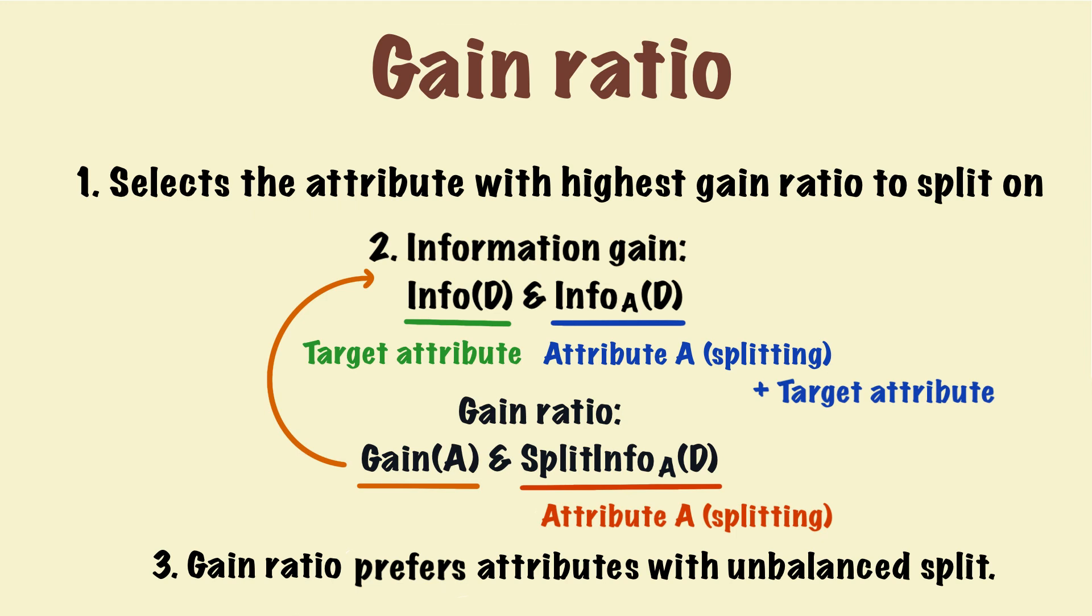Last, gain ratio prefers attributes with unbalanced splits. In other words, if the attribute has a class which is a much larger size than the others, then this attribute's gain ratio tends to be high. This is a problem just like information gain favors attributes with many classes.